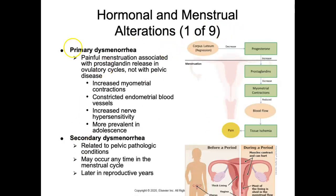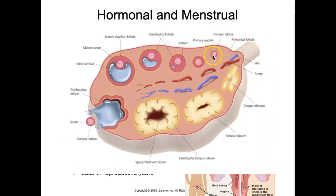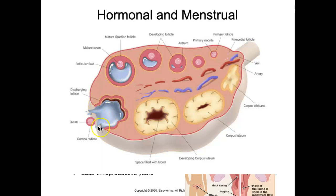As we go through the ovarian cycle — I'm going to throw up an image to refresh our memories — we can see a primary oocyte starting to develop, building follicles around it. We have a mature Graafian follicle with the antrum filled with fluid pushing the egg to one side, and around day 14 that egg is ejected and ovulation takes place. What is left of those follicles starts to develop into a corpus luteum, which then begins to regress.